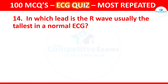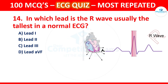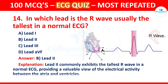Question 14: In which lead is the R wave usually the tallest in a normal ECG? Options are Lead 1, Lead 2, Lead 3, and Lead AVF. The correct answer is Lead 2. Lead 2 commonly exhibits the tallest R wave in a normal ECG, providing a valuable view of the electrical activity between the atria and the ventricles.